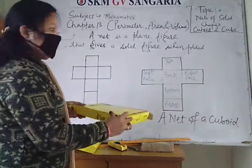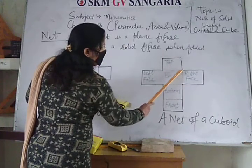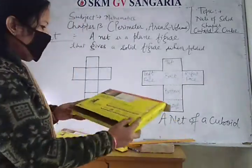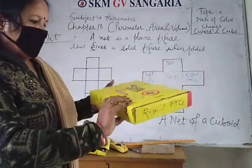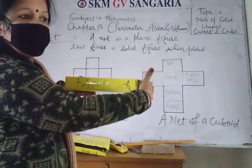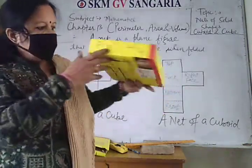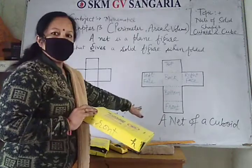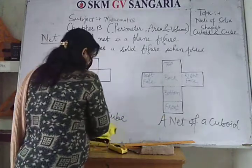These are the creases shown by dotted lines. When you fold it along the crease, you will get the shape of the same box — the cuboid. This will be the top, bottom, right face, left face, front, and back. This is the net of a cuboid.